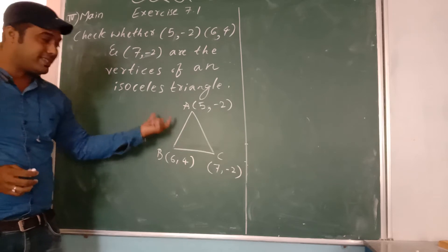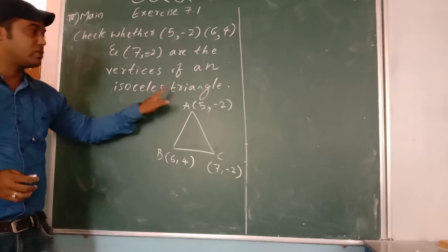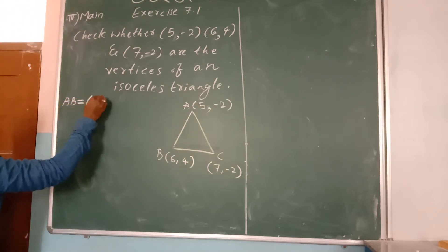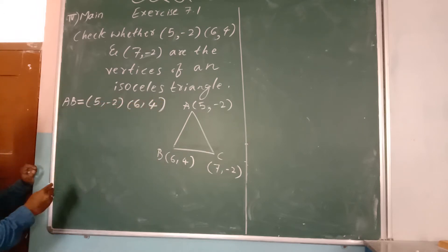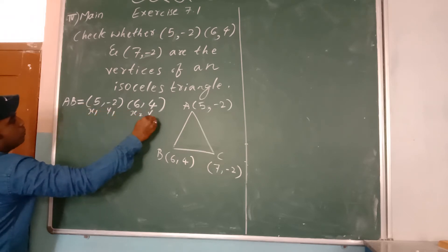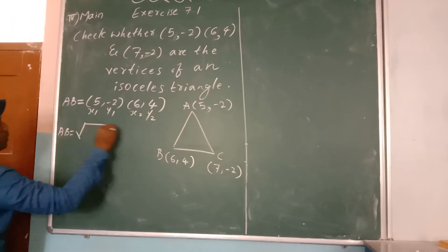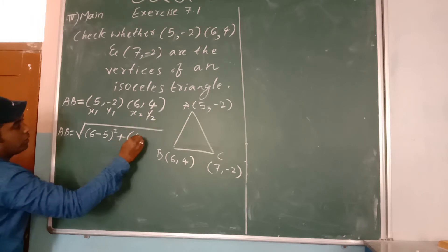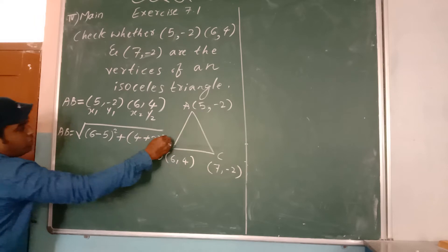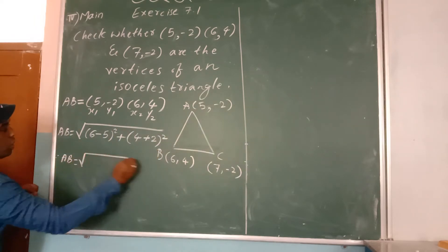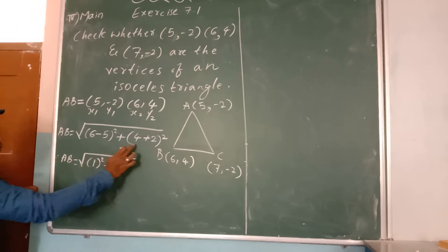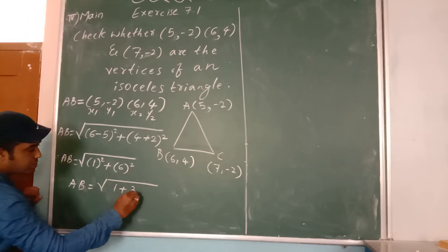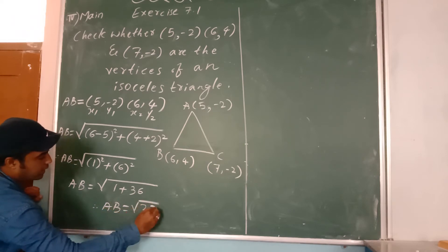If two values come to be the same, then I can say that the given pair of points forms an isosceles triangle. Let me find out first the distance AB. A is 5 comma minus 2 and B is 6 comma 4. I will apply the distance formula: AB is equal to square root of x2 minus x1 whole square plus y2 minus y1 whole square. x2 is 6 minus 5 whole square, plus 4 minus of minus 2, that becomes plus 2 whole square. Therefore AB is equal to square root of 1 square plus 6 square, which is 1 plus 36. Therefore AB is equal to root of 37 units.